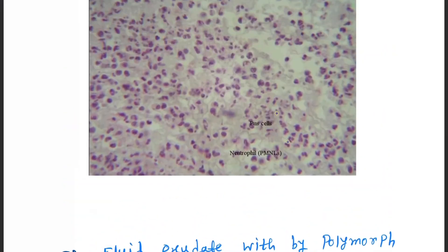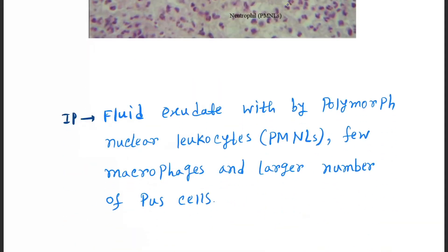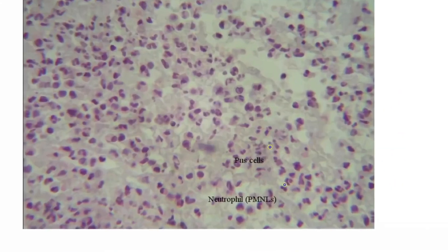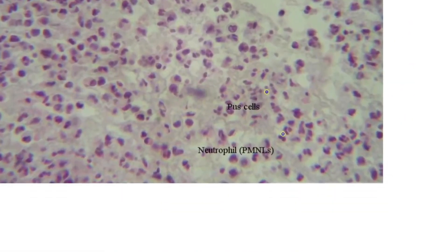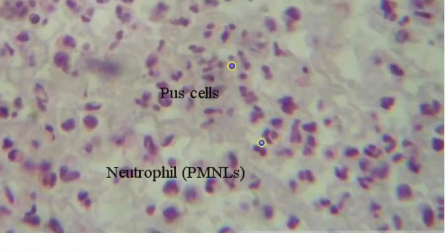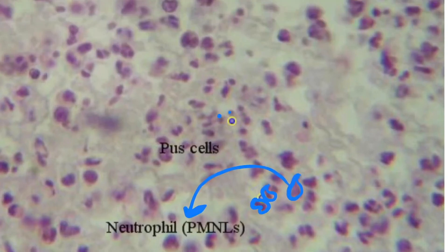The next image shows the polymorphonuclear leukocytes — PMNLs — and plasma cells. Here you can see the neutrophils, and these smaller cells are the plasma cells.